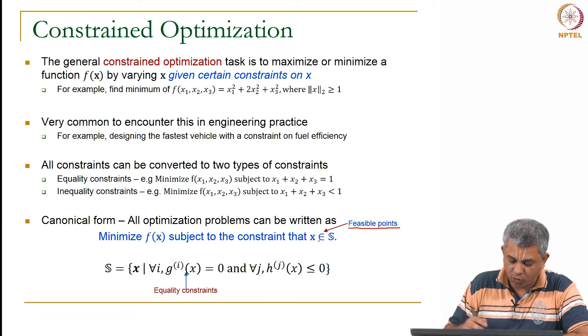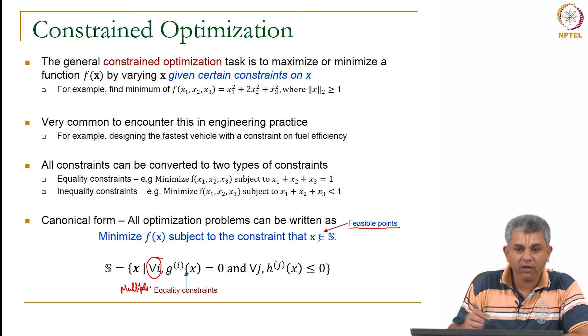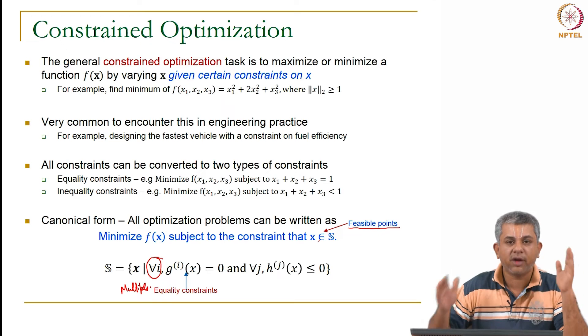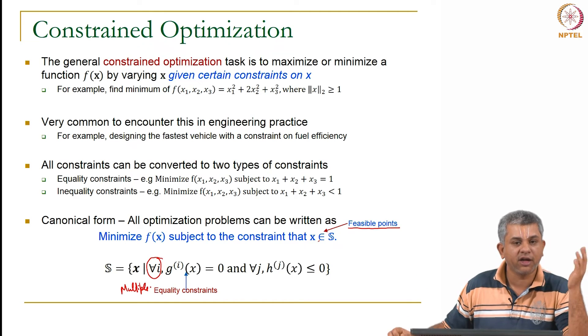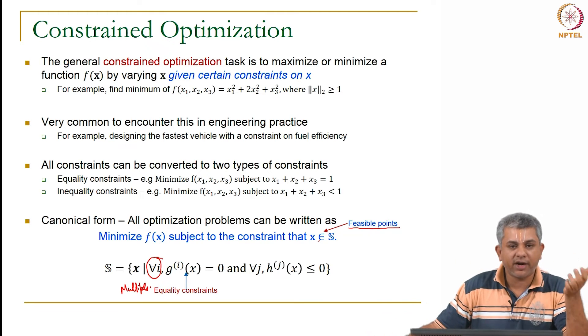Instead of having one equality constraint, let's say you have multiple equality constraints. So you are designing a room. You could say length has to be this much, breadth has to be this much, but you are free to decide on the height. In that case, your length and breadth would now be equality constraints.